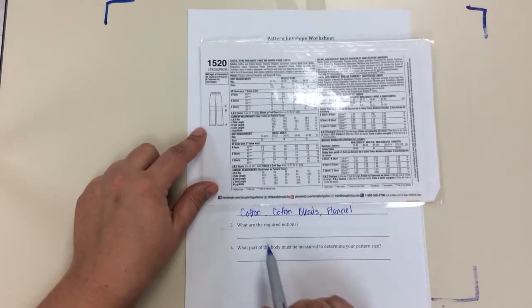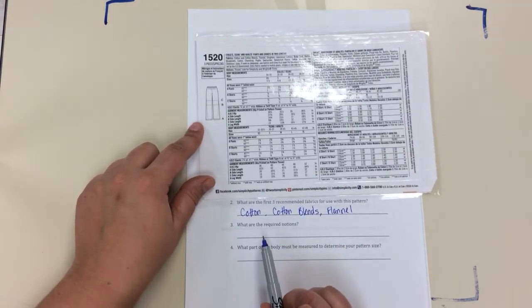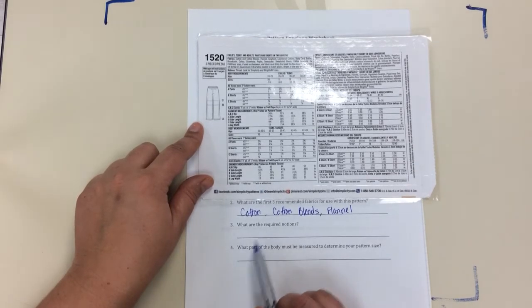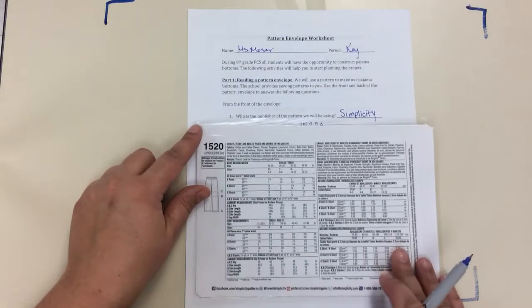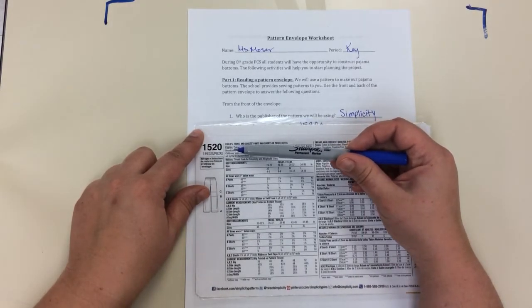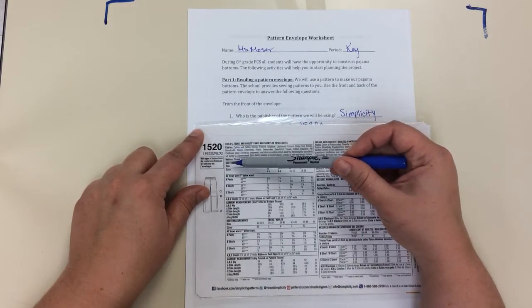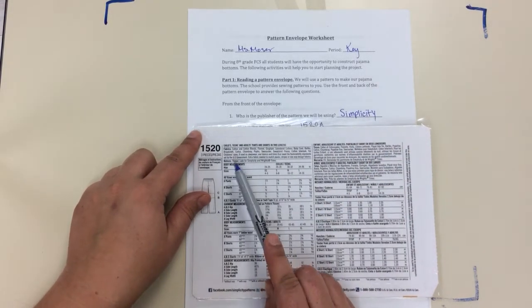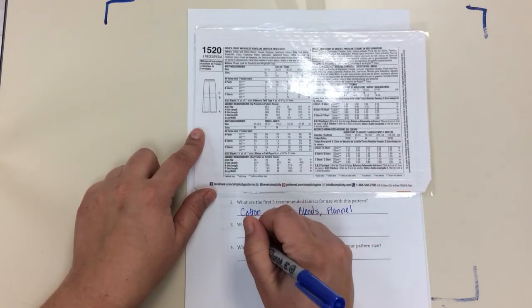And then it's asking about notions. Notions are things like thread, buttons, hooks. For this project, if we come down, we saw our fabrics on your envelope. Here it says notions, and the notions for here - the only thing you need is thread. So we're just going to go ahead and write that down.